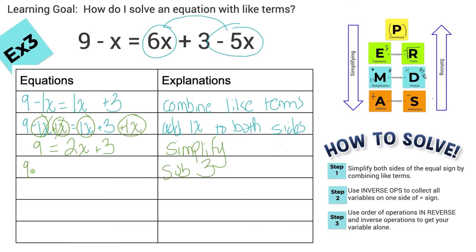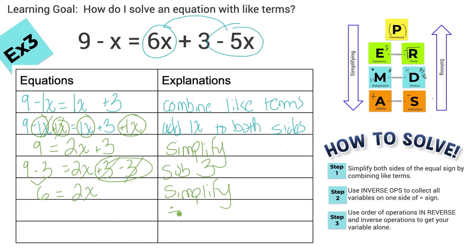Subtract 3 from both sides. So I brought things down and subtracted 3 from both sides. Now simplify by combining like terms: 9 minus 3 is 6, and positive 3 and negative 3 cancel, leaving 2x. Last step: the way we get rid of a times 2 is to divide by 2 on both sides. 6 divided by 2 is 3, those cancel, so x equals 3. The process is you go back and forth between simplifying and solving — combine like terms, then inverse operations — until you get x alone.